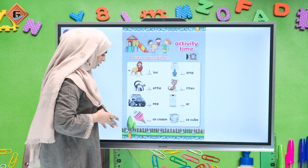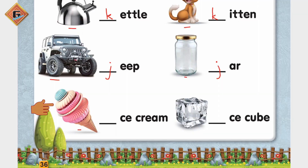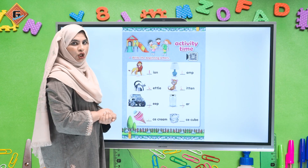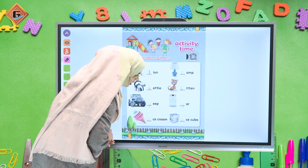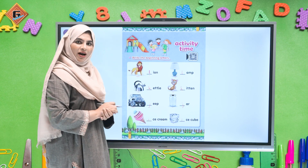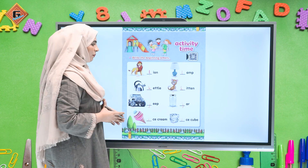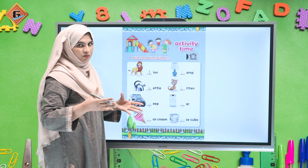Aage dekhenge — this is an ice cream. Aur ice cream kis se start hota hai? Letter I se start hota hai. Aur last one is ice cube. Ice cube bhi I se start hota hai. To yahan hum kya likhne wale hain? Yahan pe bhi hum letter I likhenge. To is tarah se aapne is page ko complete kar lena hai.